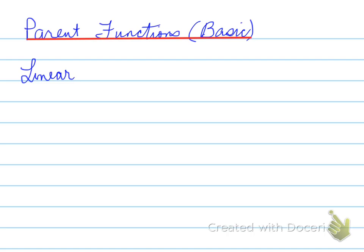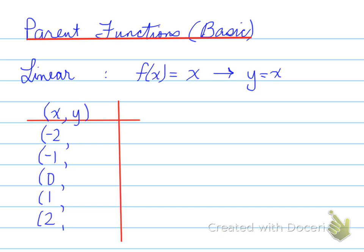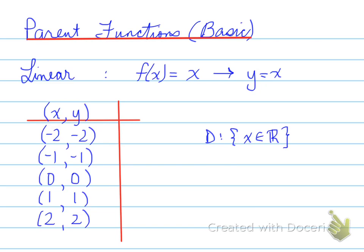The first function is linear. A linear function equation is f(x) equals x, or as we famously know it, y equals x. What does that mean? Given the x-coordinates we have studied up until now, for every x value the y value is exactly the same for a linear function. We need to look at the domain. The domain of a linear function is as follows — very important — what does this graph look like?